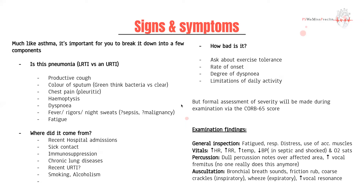When taking a history, you want to determine if this is a lower respiratory tract infection like pneumonia versus an upper respiratory tract infection. Key features include a productive cough, sputum, chest pain with a pleuritic component — which can indicate complications like empyemas — hemoptysis, and shortness of breath as an indicator of severity. Also ask about fevers, rigors, and night sweats, which can be associated with sepsis from the pneumonia or an underlying malignancy.